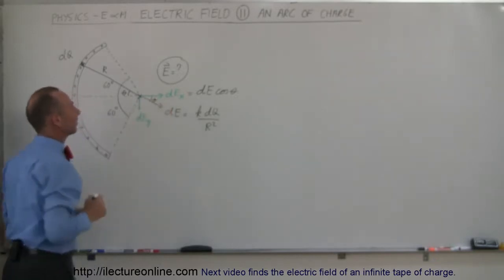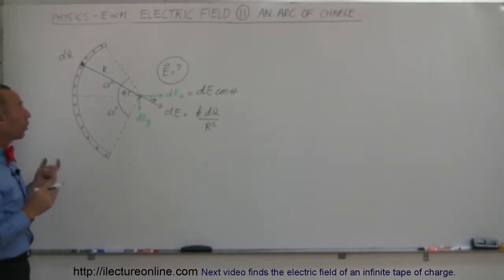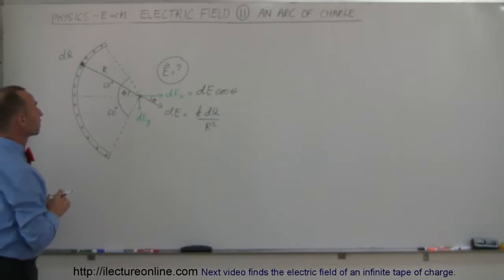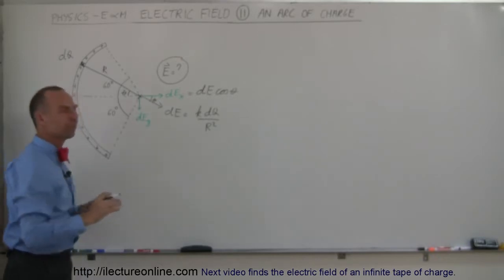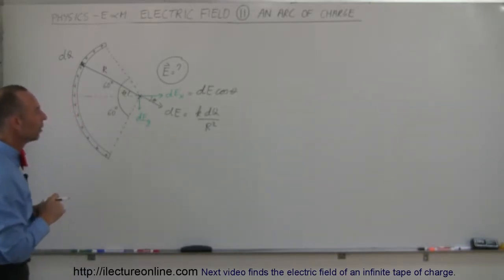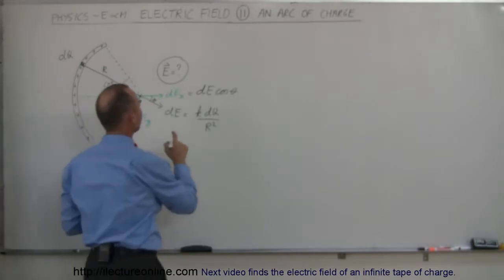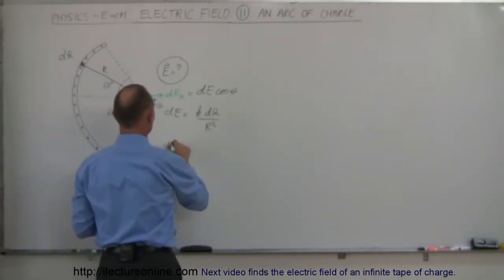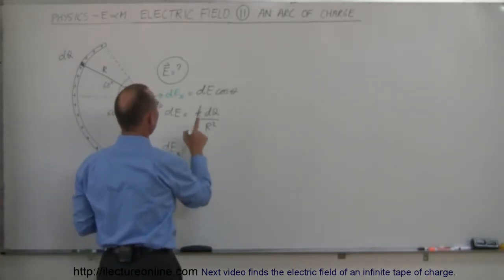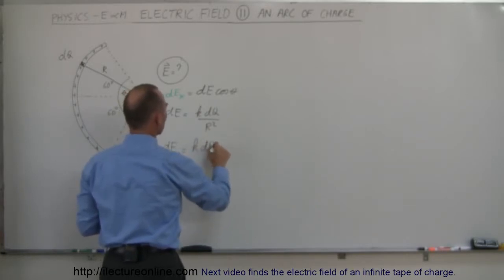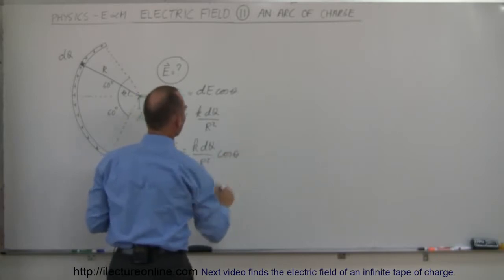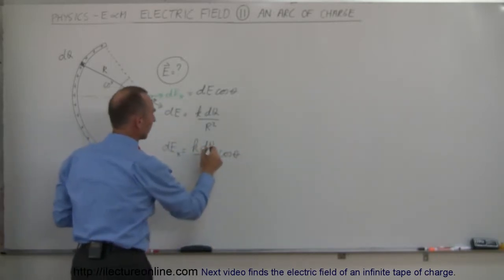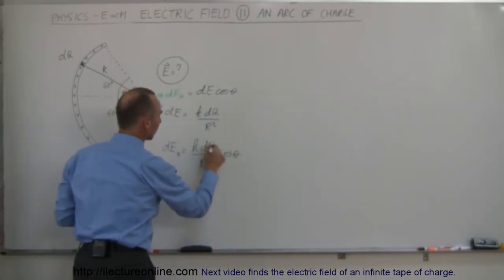There's the little angle theta right there. So DEX can be written as DE — which is K times DQ over R squared — times the cosine of theta. Note that this is DQ, not D theta, so we have to be careful here.